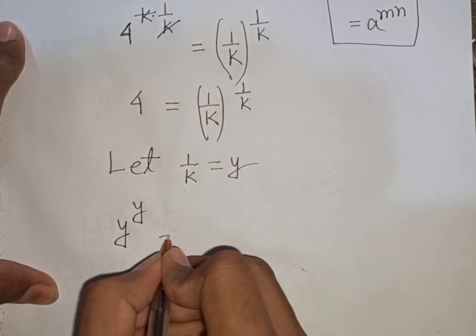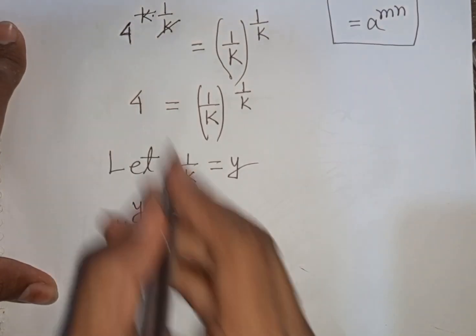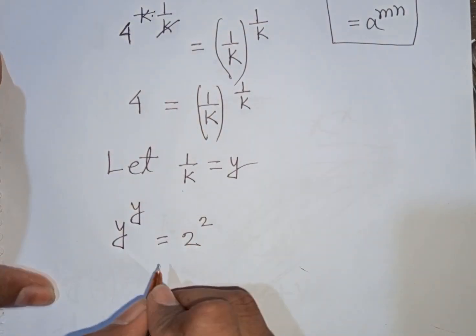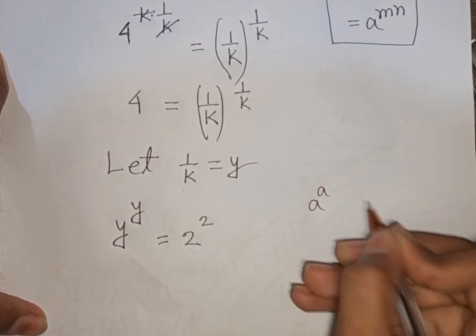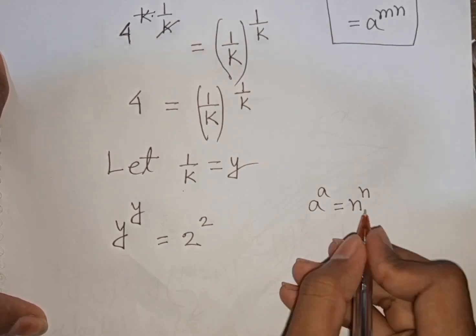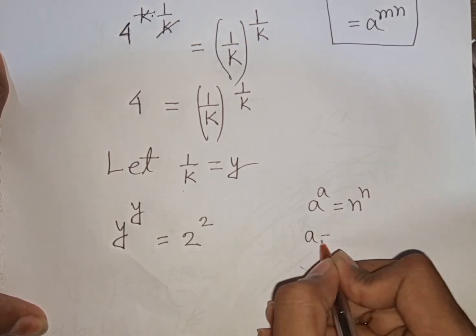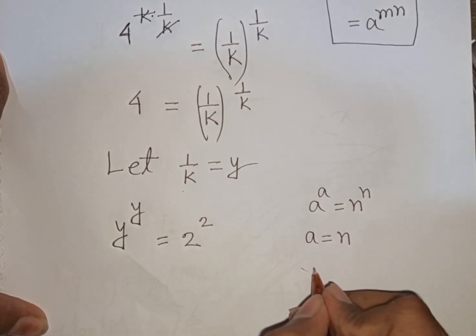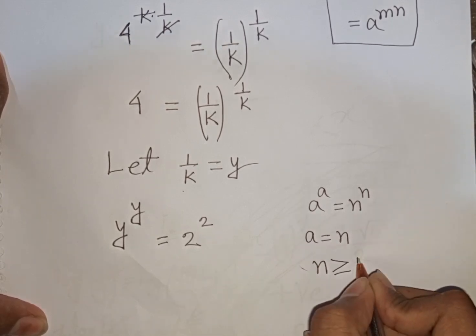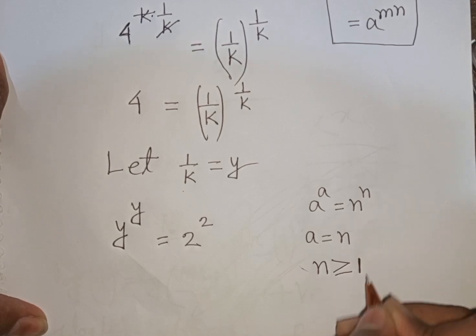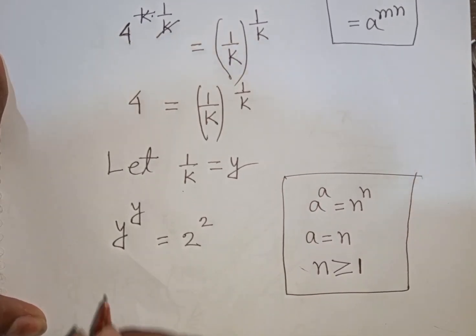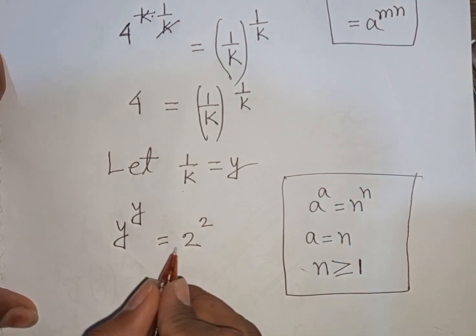4 is equal to 4, same as 2 power 2. Now here I can apply this rule: a power a is equal to n power n, so a will be equal to n, where n is greater than or equal to 1. So according to this rule I can compare here — y will be equal to 2.